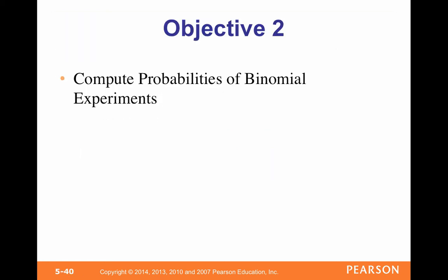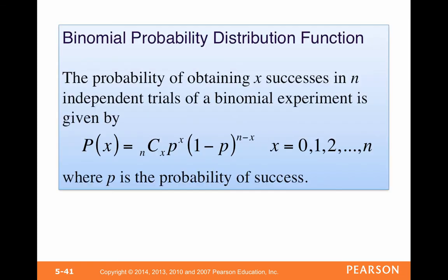So let's compute the probabilities of a binomial experiment. The big thing is we have this formula: the probability of obtaining X successes in N independent trials of a binomial experiment is N choose X, times the probability of success to the X power, times one minus the probability of success — which is the probability of failure — to the N minus X. This works for X anywhere from zero to N. I'll show in my other video how it works, and also how to use the binomPDF function on the calculator.